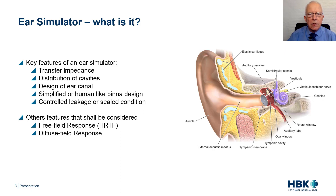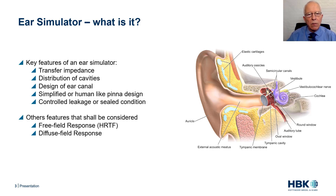The purpose of an ear simulator is to replicate specific properties of the human ear. Important features of an ear simulator are the acoustic impedance, distribution of cavities for realizing a specific acoustic impedance, design of the ear canal, pinna design — simplified or human-like pinna — control leakage, or shield conditions. Other features shall be considered when embedding the ear simulator in a head and torso simulator, or HATS for short, and that is the free field response or HRTF — head related transfer functions — as well as diffuse field response.